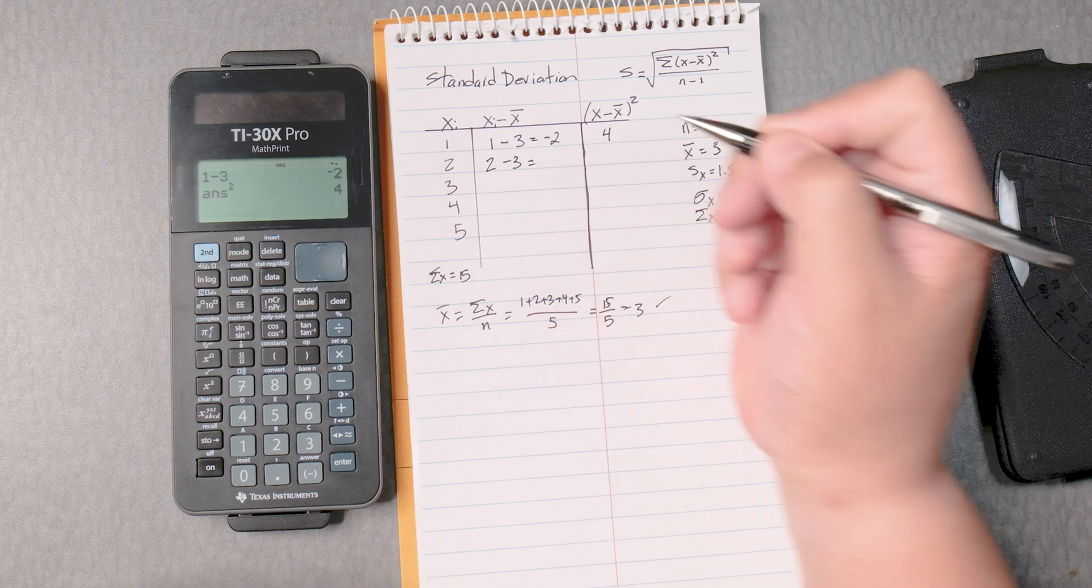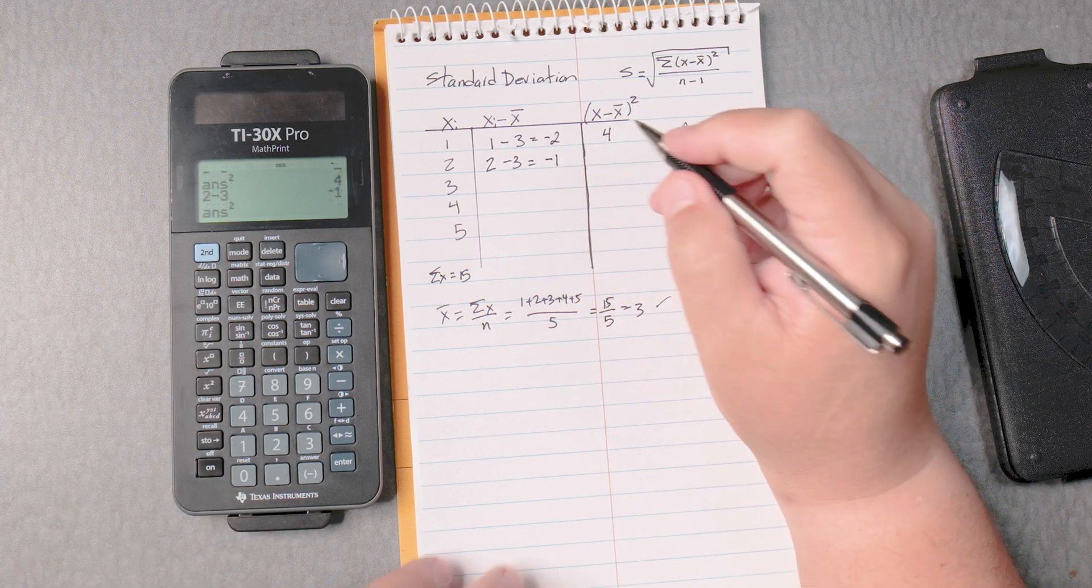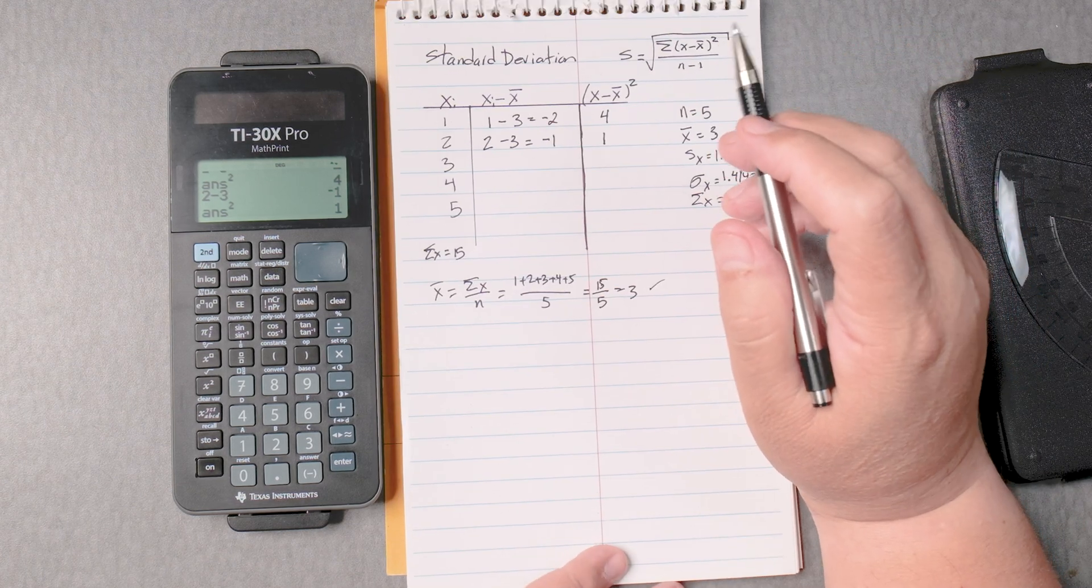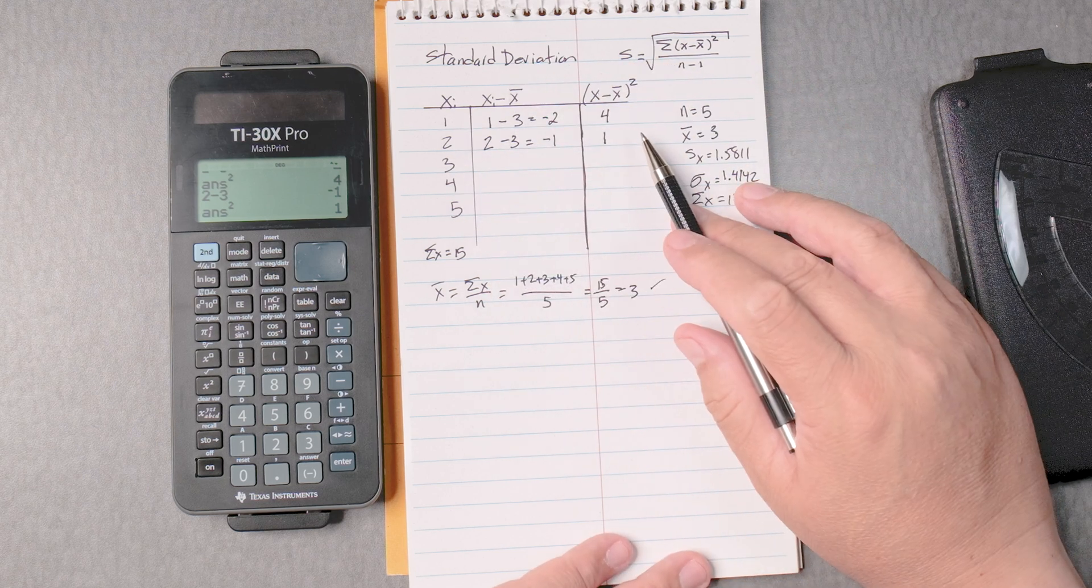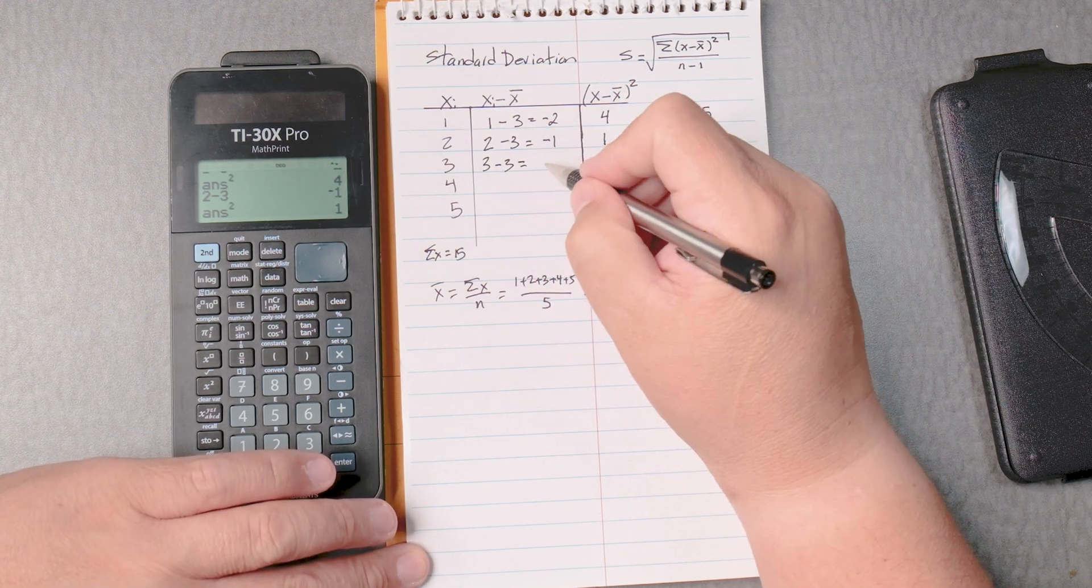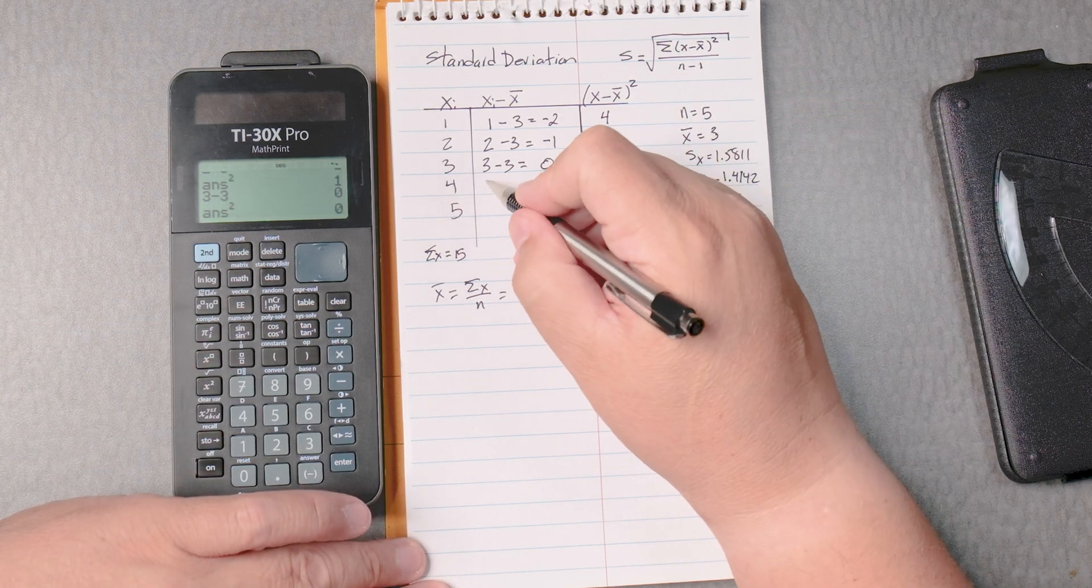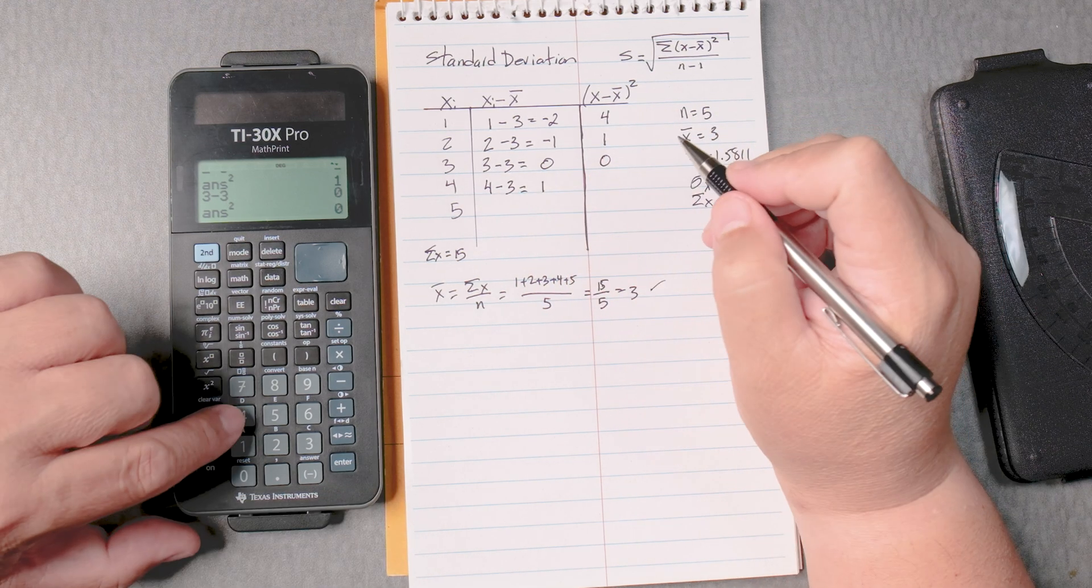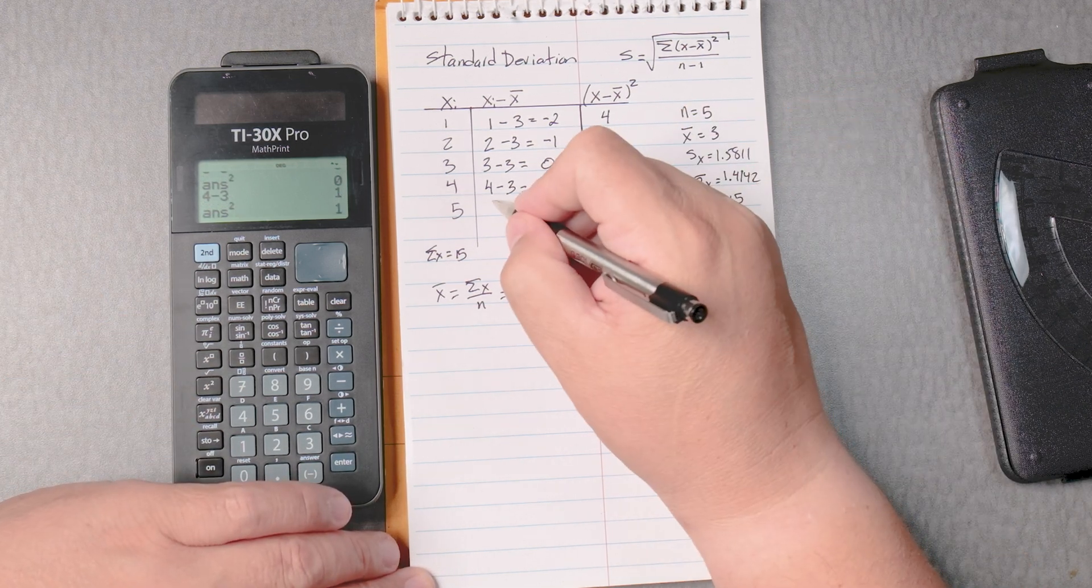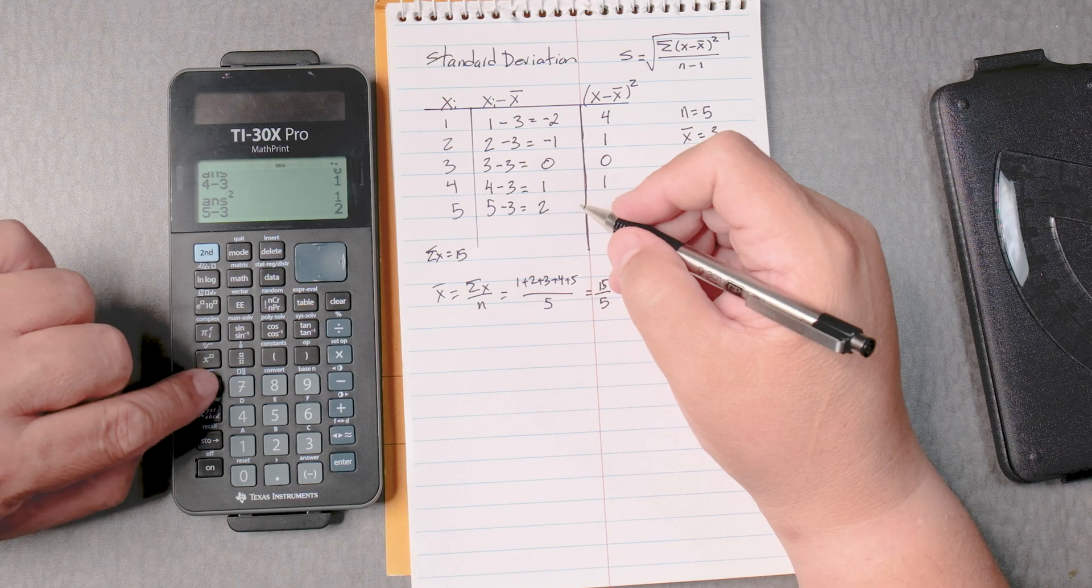Let's do the next one. 2 take away 3, enter, and then that's going to give you negative 1. Then you square it, enter, 1. Negative 1 times negative 1 is 1. Now, be aware that your teacher might not want you to do it this way by hand. So you have to ask. 3 take away 3 is going to be 0. 3 take away 3, 0. And when you square 0, what do you get? 0. 4 take away 3 is going to give you 1. 4 take away 3, give you 1. And then when you square it, gives you 1. And then 5 take away 3 equals what? 2, 5 take away 3, enter, gives you 2. And then when you square it, it's 4.